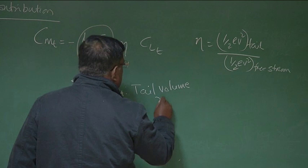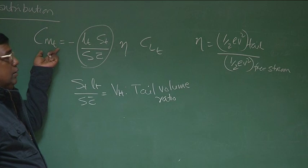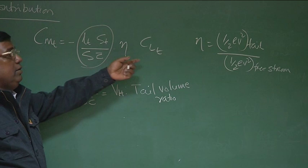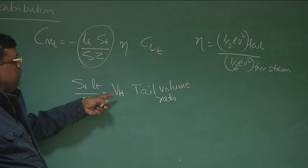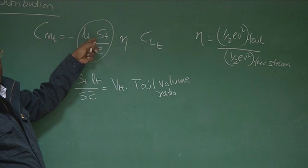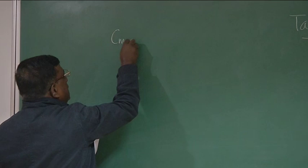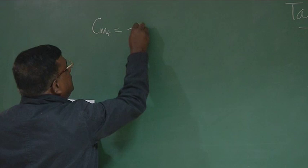We will soon discuss the importance of this. But at this point, you should appreciate that the pitching moment because of the tail will largely depend upon the tail volume ratio V_H for a given C_L_T. This tells a designer: if you want to increase V_H, you can increase this contribution by increasing tail area, tail moment arm, or both. So C_Mt equals minus V_H·eta·C_L_T.